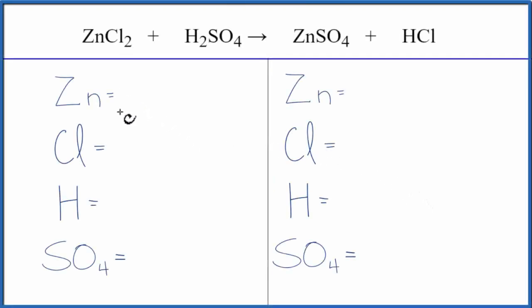In this video we'll balance the equation zinc chloride plus sulfuric acid. Let's add the atoms up on both sides of the equation. We have one zinc, two chlorines, two hydrogens, and then this SO4.